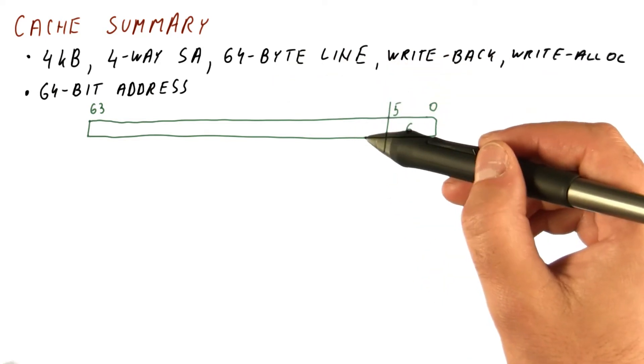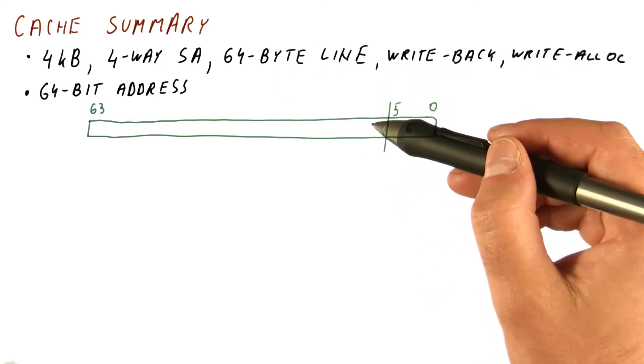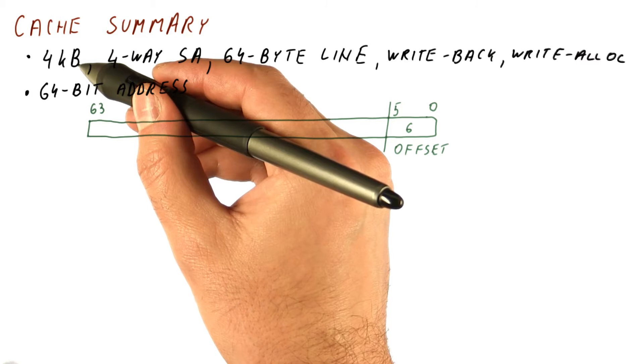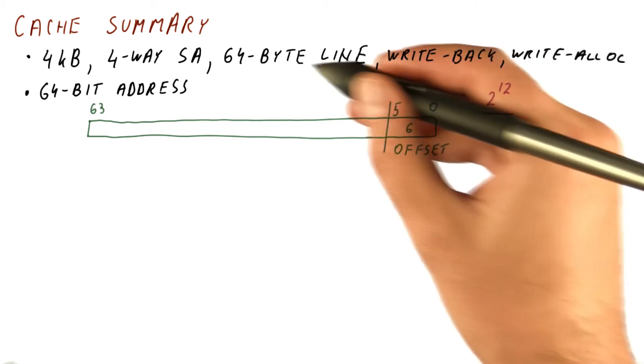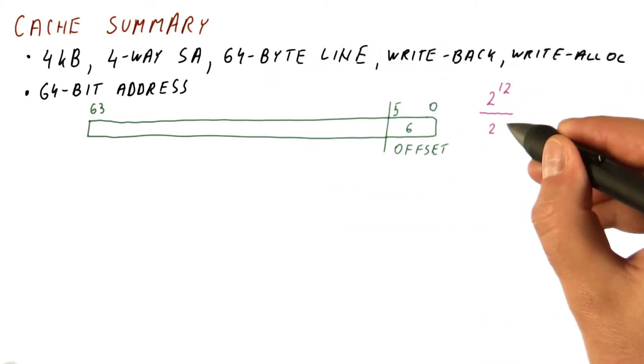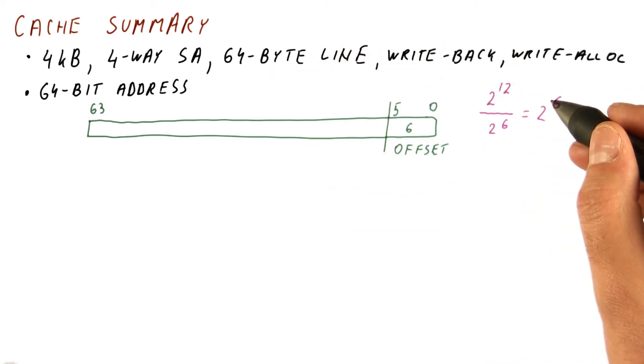Next, we need to determine how many sets this cache has. It's a four kilobyte cache, that's 2 to the 12th bytes. The number of blocks is that divided by 64, which is 2 to the 6th. So we have 2 to the 6th blocks in the cache.